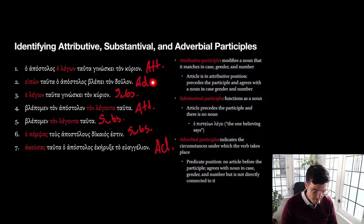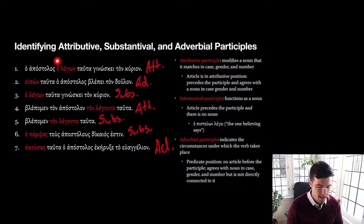What we have is: attributive, adverbial, substantival, attributive, substantival, substantival, adverbial. Let's walk through them. So we have 'the apostle, the one speaking' — we have the article with a participle modifying the apostle, making it attributive. Here we have 'apon' as our participle with no article before it, not modifying anything else. Saying these things, the apostle sees the slave — so we're saying these things, and this adverbial participial phrase tells us the circumstances under which the action of the verb happened.